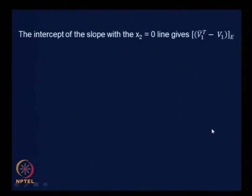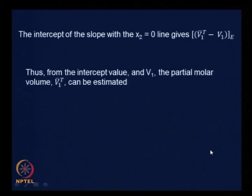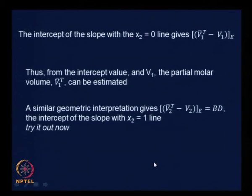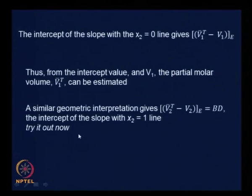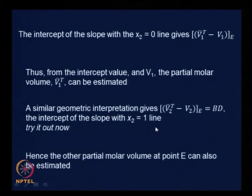V₁, of course, is the molar volume of the pure component. That is easily known. And once you know the intercept, you could get V₁ᵀ hash. So it is given here from the intercept value and V₁, the partial molar volume V₁ᵀ hash can be estimated. Now, a similar geometric interpretation gives V₂ᵀ hash minus V₂ at E equals the other intercept. What I would like you to do is to convince yourself that it is indeed the other intercept. Convince yourself by going through the same procedure again. I would like to leave that as homework for you. And when we begin the next class, we will take things further. See you in the next class.